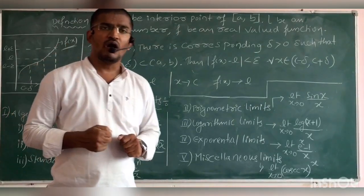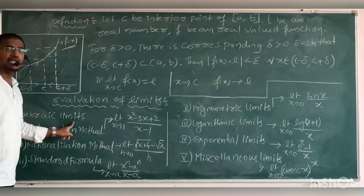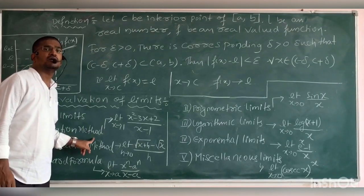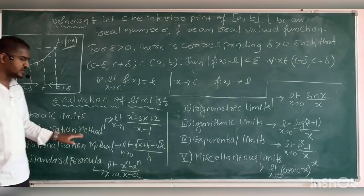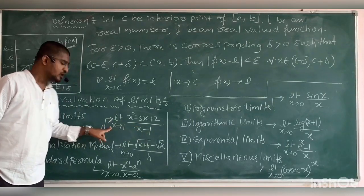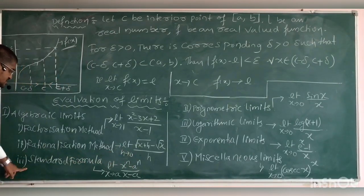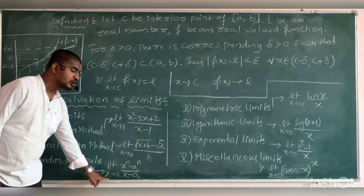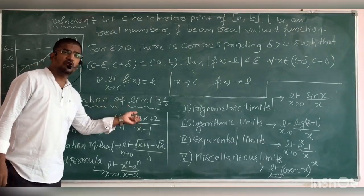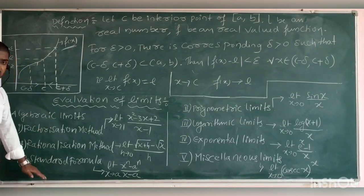In exams they are going to ask problems on this particular concept. So what are those types of problems? Look here: algebraic limits. In algebraic limits, we have three types. One is the factorization method. Next is the rationalization method. And the standard formula method — each with one example. You must have an idea of which type of problems belong to factorization, rationalization, or standard formula.